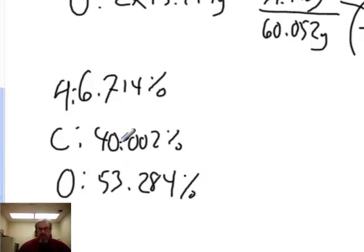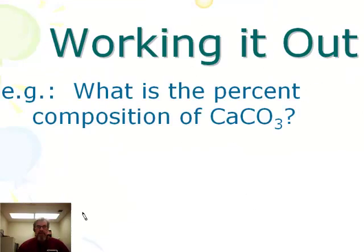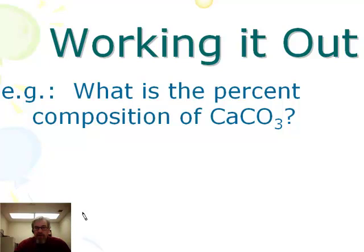53 and 40 is about 93, and approximately 7 more is about 100, so everything checks out. Now you try: what's the percent composition of calcium carbonate? Grab your periodic table and a calculator and get to work.